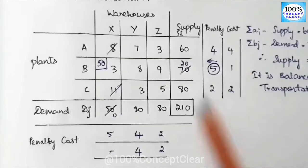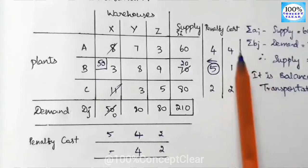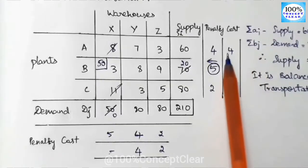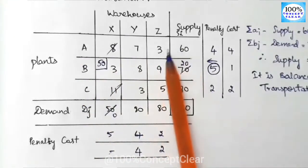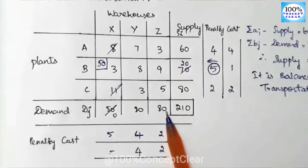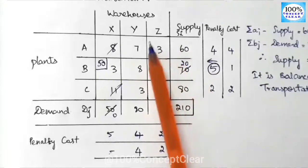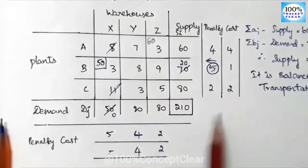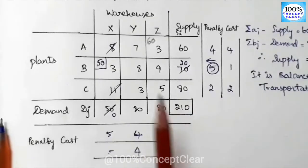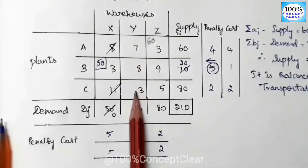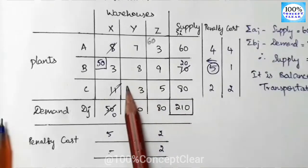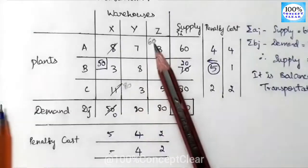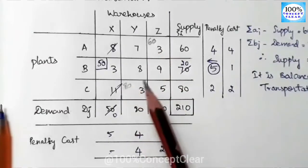To break the tie, we consider the first row's least cost which is 3. Then we consider column 2 where the least value is 3. Supply is 80 and demand is 80. We mark this cell. We allocate 60 in one cell and 80 in another — that's why we add 80 to the allocation.